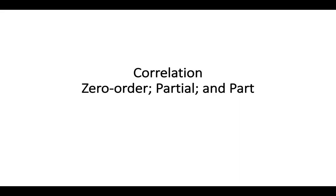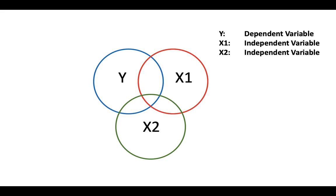I have a few PowerPoint slides that will hopefully get across the concept of what zero order, partial, and part correlations are. To motivate that, I'm going to consider three variables: variable y, which is our dependent variable; variable x1, an independent variable; and variable x2, another independent variable. What we're trying to do is understand the behavior — really the variation or variance — of variable y, and account for as much of that variance as possible by considering other variables and the variance associated with them.